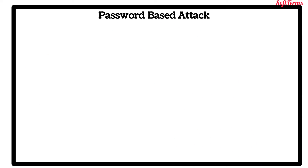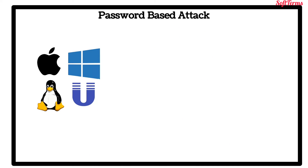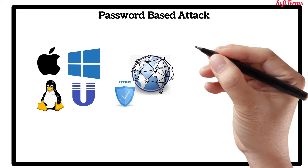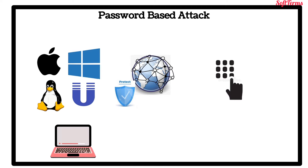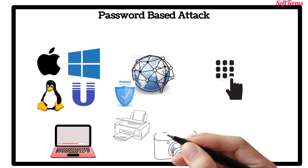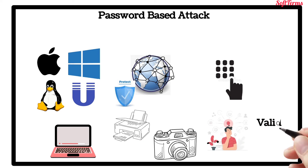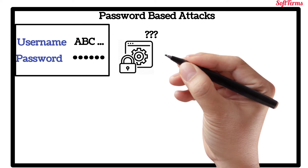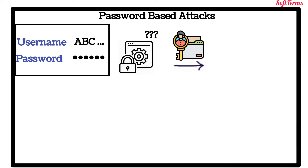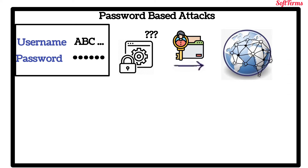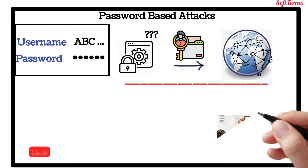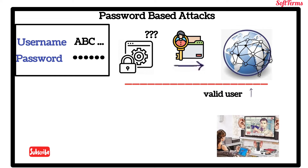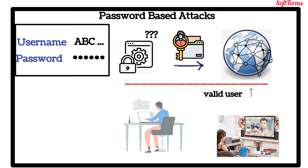Password Based Attacks: A common denominator of most operating systems and network security plans is password-based access control. This means the access rights to a computer or network resources are determined by who you are, i.e., the username and the password. Older applications do not always protect identity information as it is passed through the network for validation. This might allow an eavesdropper to gain access to the network by posing as a valid user.